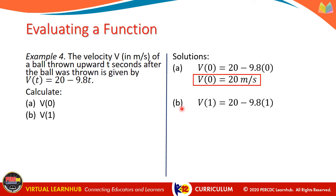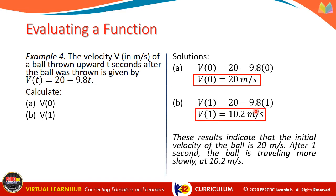For letter b, v of 1 equals 20 minus 9.8 times 1 — we just replace t with 1 — giving us 10.2 meters per second. These results indicate that the initial velocity of the ball at time equals 0 is 20 meters per second, and after 1 second, when t equals 1, the ball is traveling more slowly at 10.2 meters per second.